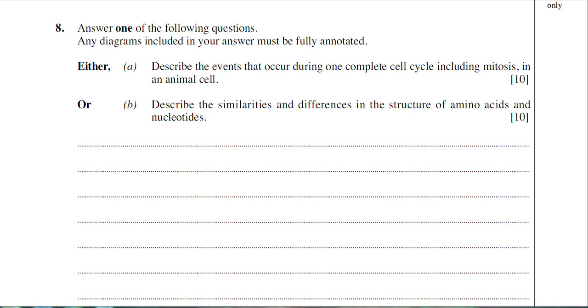Part A is looking at the cell cycle and mitosis, but part B is a very unusual question. I was surprised when I first saw this question. They've not done anything like this before. They're asking you to describe the similarities and differences in the structure of amino acids and nucleotides. I think that's quite unusual.